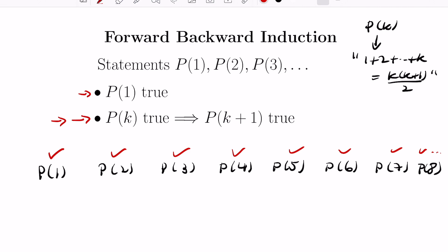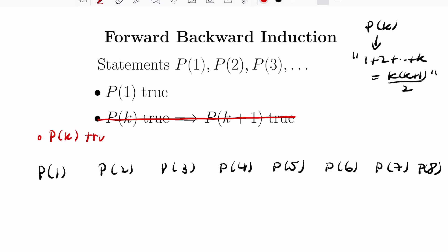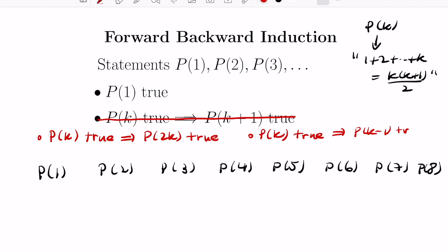How does forward-backward induction work? It puts a twist on the standard inductive step, replacing it with two things. One, called the forward part, is that if P(k) is true then P(2k) is true — so there's a jump in the forward part. And then there's a backward part: if P(k) is true, then the previous statement P(k-1) is true.